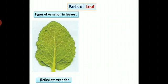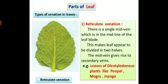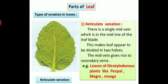Types of venation in leaves. There are two types of venation in leaves. First type: reticulate venation. There is a single midvein which is in the midline of the leaf blade. This makes leaf appear to be divided into two halves. The midvein gives rise to secondary veins. Leaves of dicotyledonous plants show reticulate venation. For example, peepal, mogra and mango.